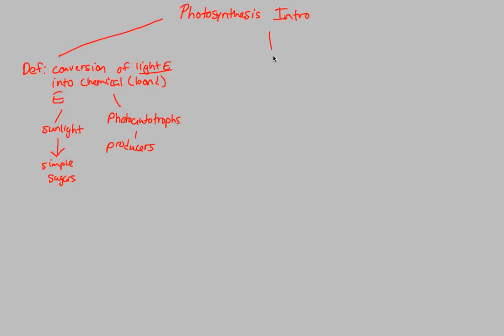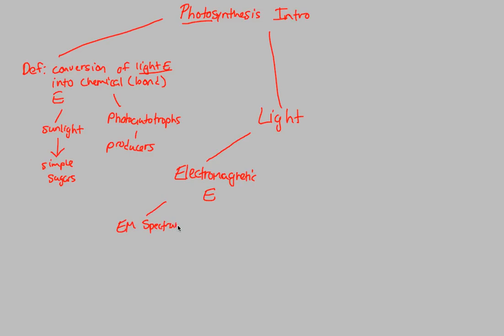They produce their own chemical energy utilizing the light energy provided by sunlight. More specifically, before getting into the actual process of photosynthesis, you have to break down the word 'photo,' which is the Greek way of saying light. Light itself is considered a part of electromagnetic energy — the electromagnetic, or EM, spectrum. This is the entire range of radiation.